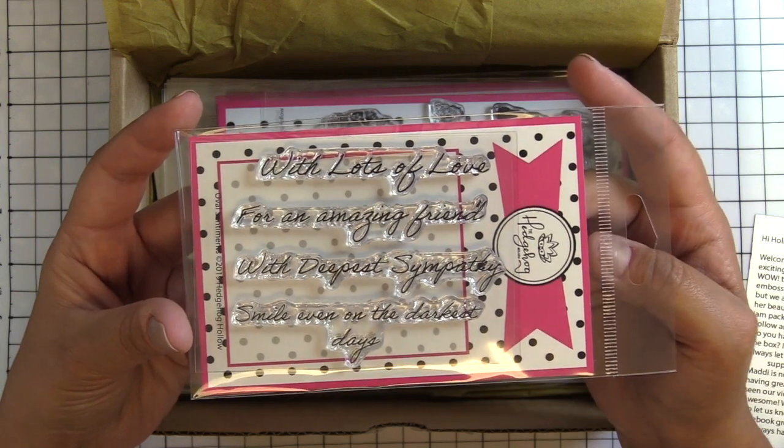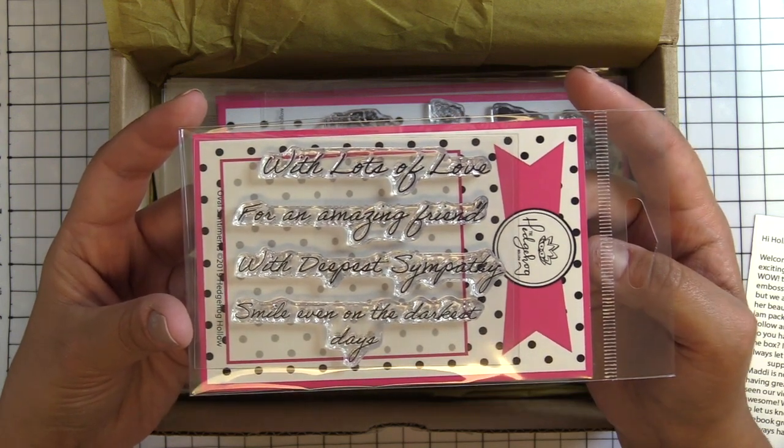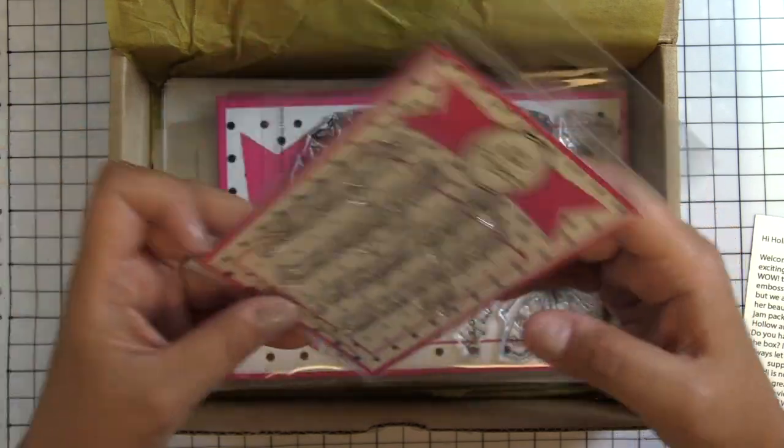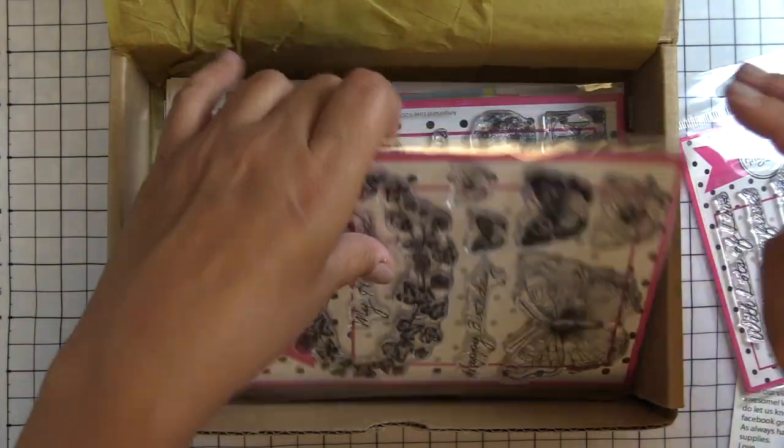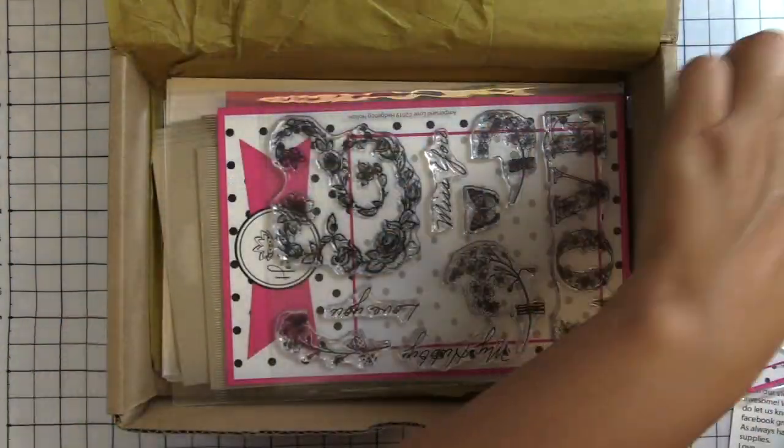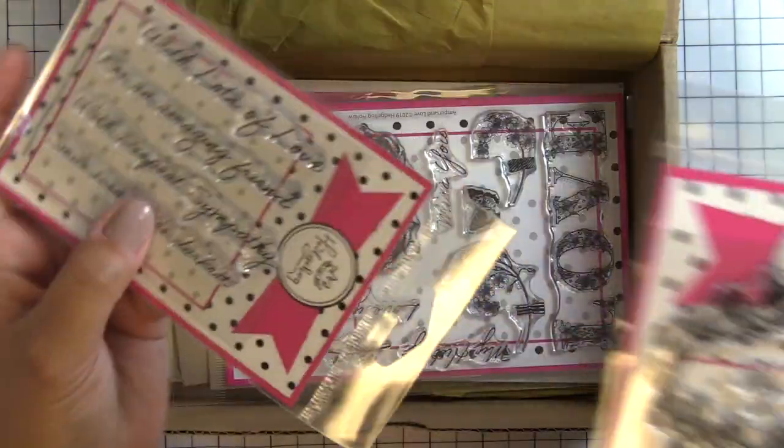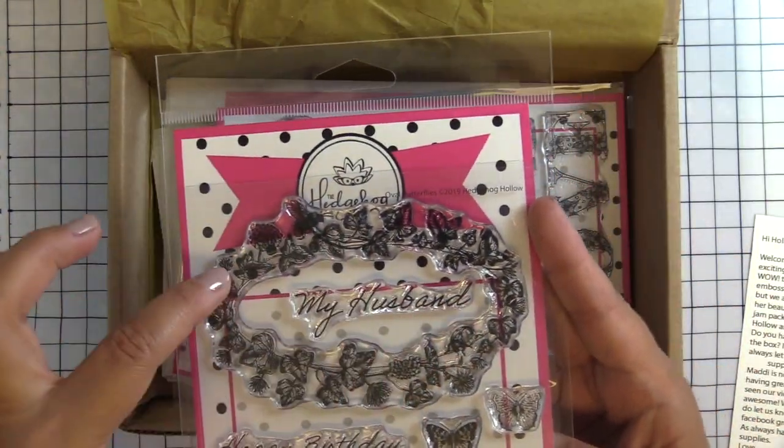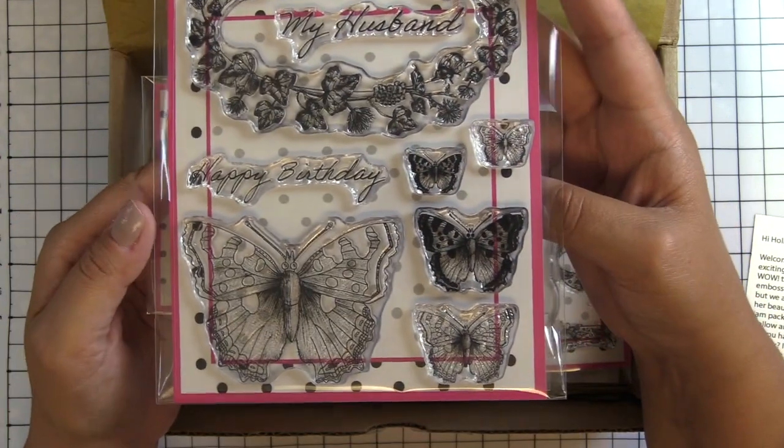This is the oval sentiment stamp set and all of these sentiments are the correct size to fit inside this floral foliage oval stamp that we have here. So you can see my husband fits in there as well as all of these other sentiments. So those are meant to coordinate together which is fantastic and that stamp is a great size.